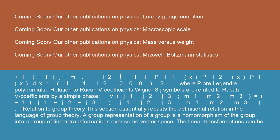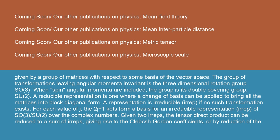Relation to group theory: this section essentially recasts the definitional relation in the language of group theory. A group representation of a group is a homomorphism of the group into a group of linear transformations over some vector space. The linear transformations can be given by a group of matrices with respect to some basis of the vector space. The group of transformations leaving angular momenta invariant is the three-dimensional rotation group SO(3). When spin angular momenta are included, the group is its double covering group SU(2). A reducible representation is one where a change of basis can be applied to bring all the matrices into block diagonal form. A representation is irreducible (irrep) if no such transformation exists. For each value of J, the 2J+1 kets form a basis for an irreducible representation (irrep) of SO(3)/SU(2) over the complex numbers.